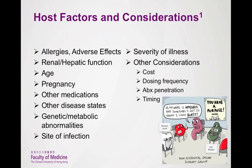A question that clinical pharmacists often get concerns antibiotic penetration into the site of the infection, such as into the bone or central nervous system. Antibiotics with relatively good bone penetration include the fluoroquinolones, cefepime, metronidazole, linezolid, daptomycin, and clindamycin. Antibiotics with good CNS penetration include the fluoroquinolones, metronidazole, cotrimoxazole, and linezolid, due to their smaller molecular size and lipophilic characteristics.